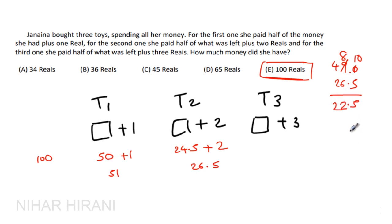Now half of 22.5 is 11.25 plus 3, that means she is spending 14.25 on toy 3. Now if we add these, do we get 100? No.